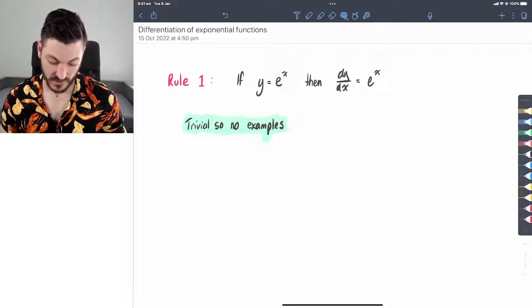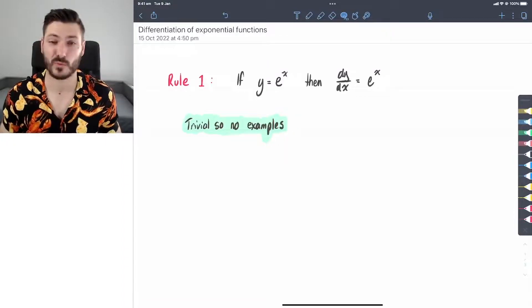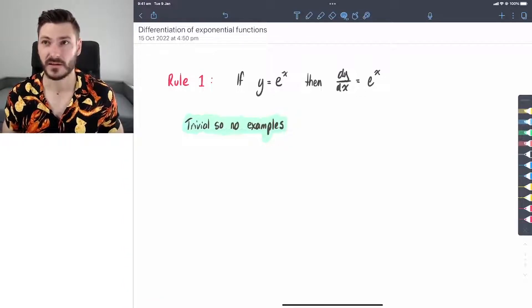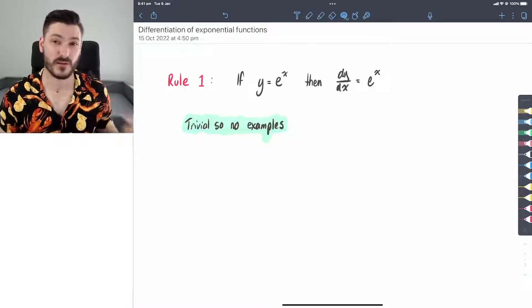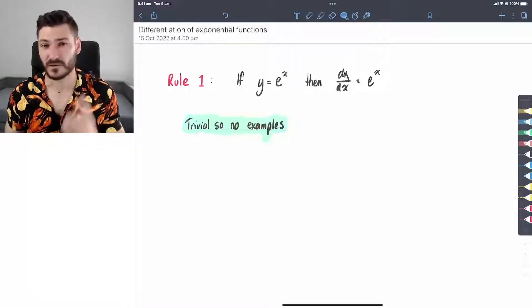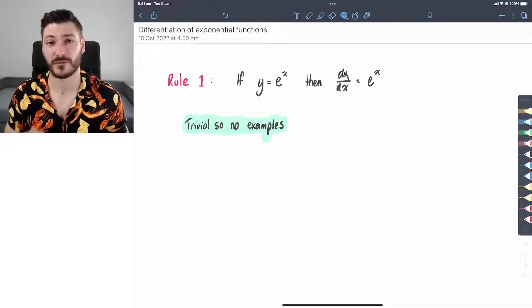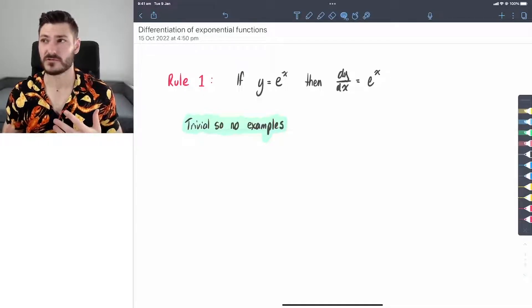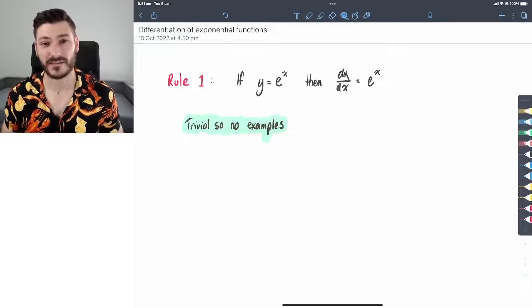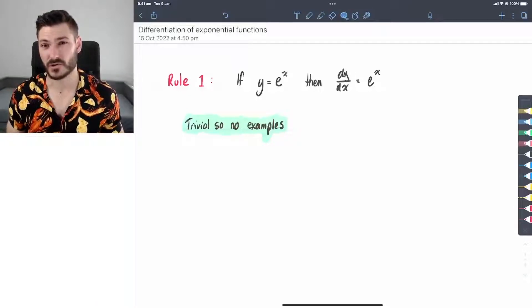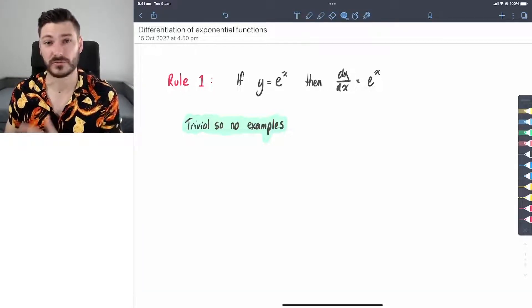So in this first rule, if we have a function y which is e to the power of x, the derivative of that function is just e to the power of x itself. There's going to be a link on the screen, a video on the screen for you to navigate to if you want to see this rule and why it exists. For now, for this video to keep it short, we're just going to know that it's true.